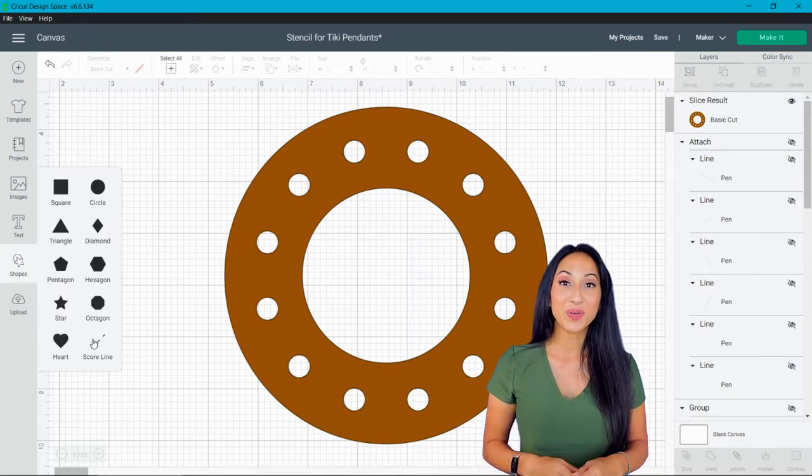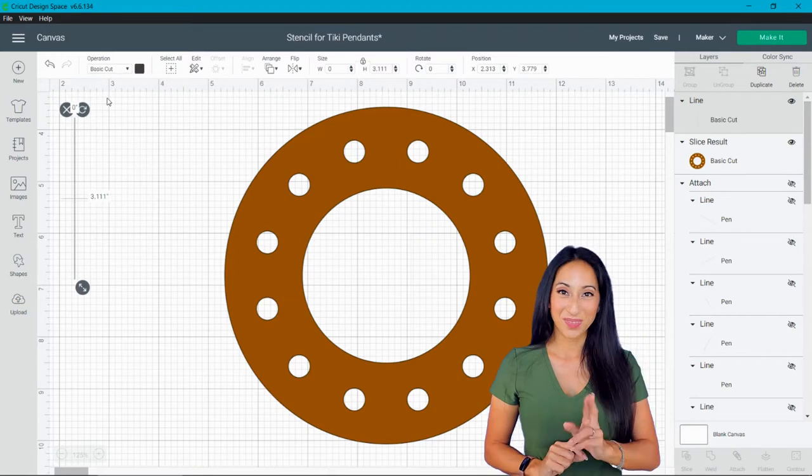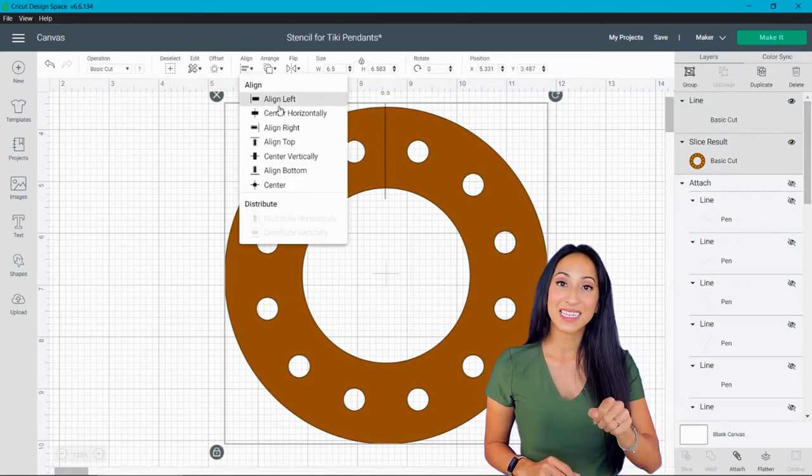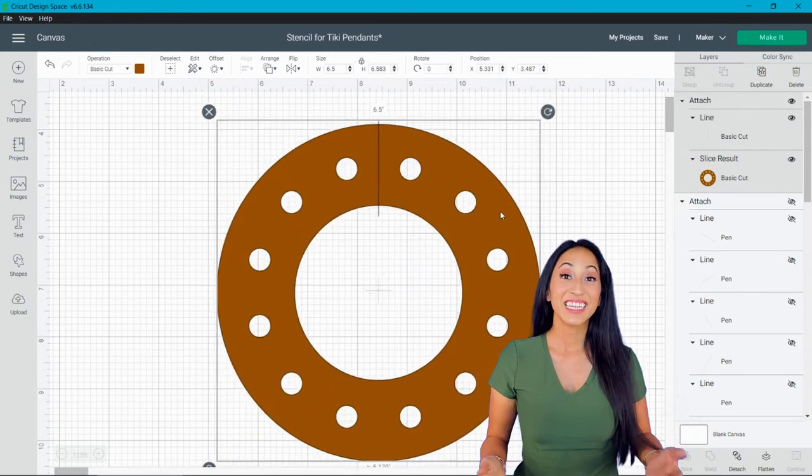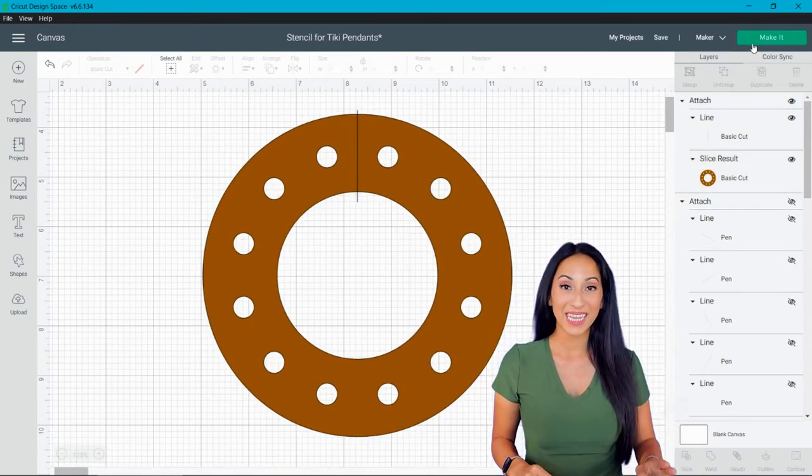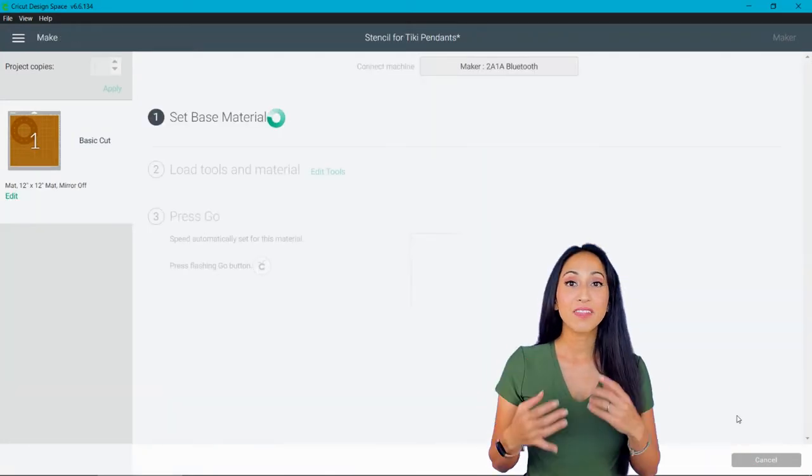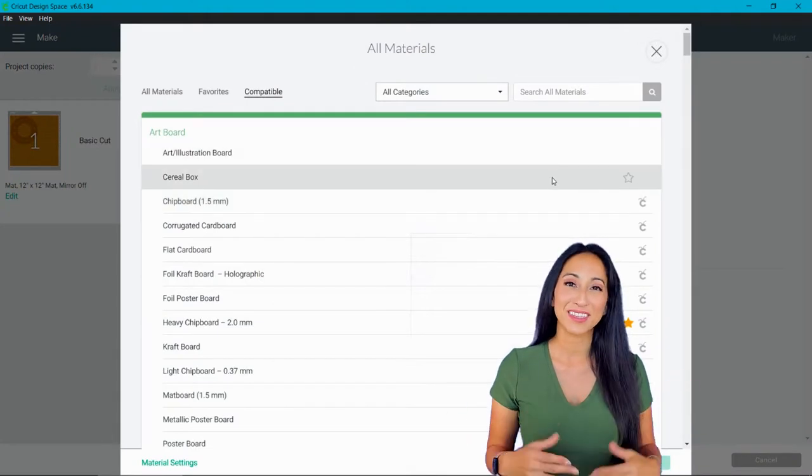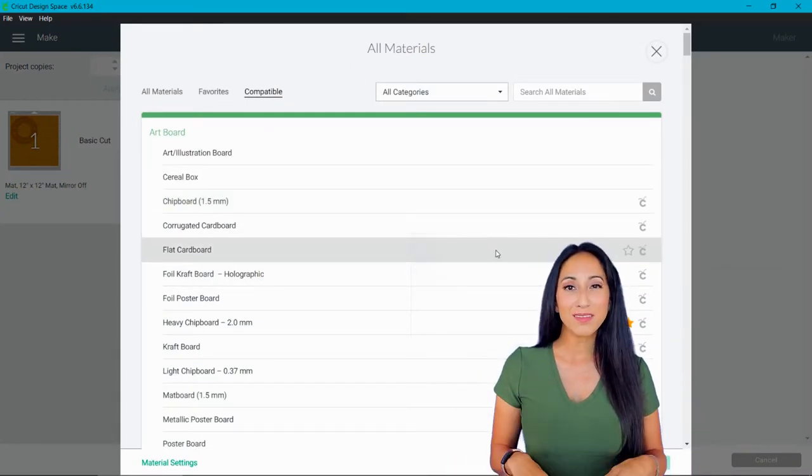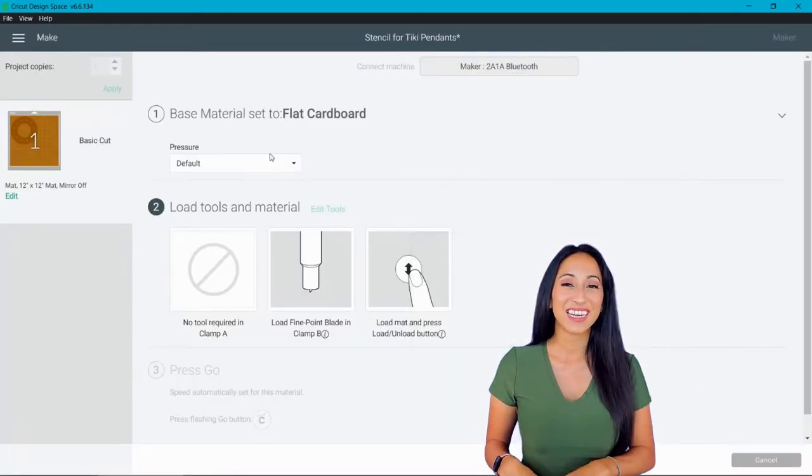Now I'm going over to the shapes button, going to score line, changing it to cut because I'm going to put a little slice mark in my stencil and later you'll see why. Then you're just going to go over to click make it, browse all materials, and click flat cardboard or if you're using a cereal box. It's just a stencil, so it just needs to be thin, somewhat sturdy, and have your Cricut cut it out.